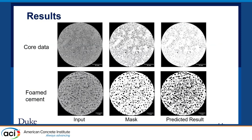These are the segmentation results. The first row shows the core dataset from the CCGT scanning, and the second row is an open dataset from Digital Rocks — the foam cement X-ray scan. The reason the foam cement appears slightly over-segmented is that its resolution is much lower than our CT scans, making the images a bit blurry, and the dataset size was insufficient. So the model may have slightly over-predicted, but this can be improved.